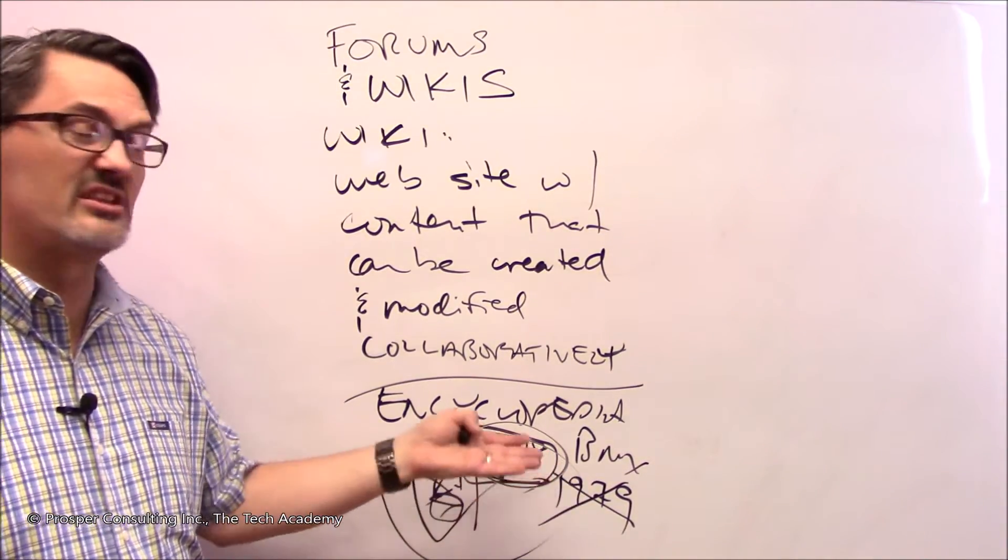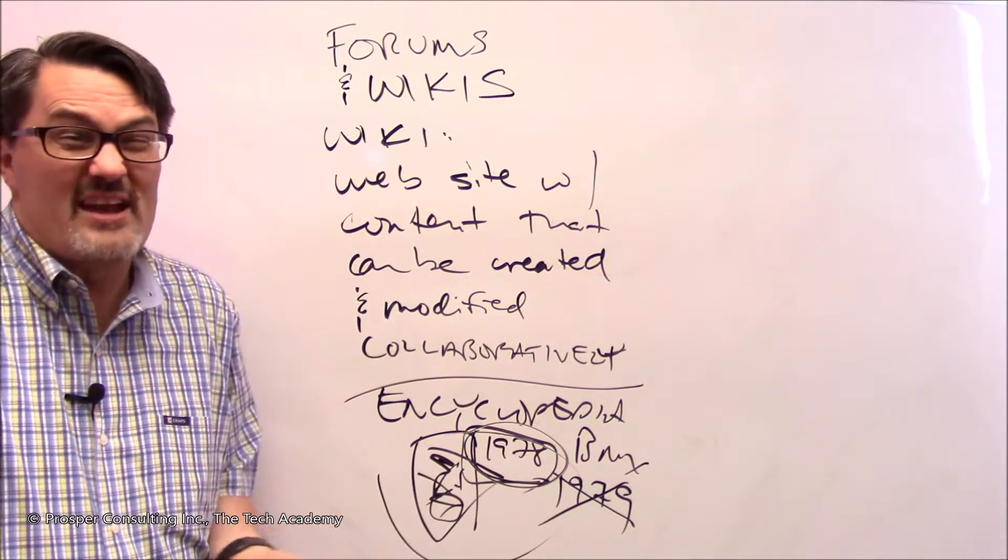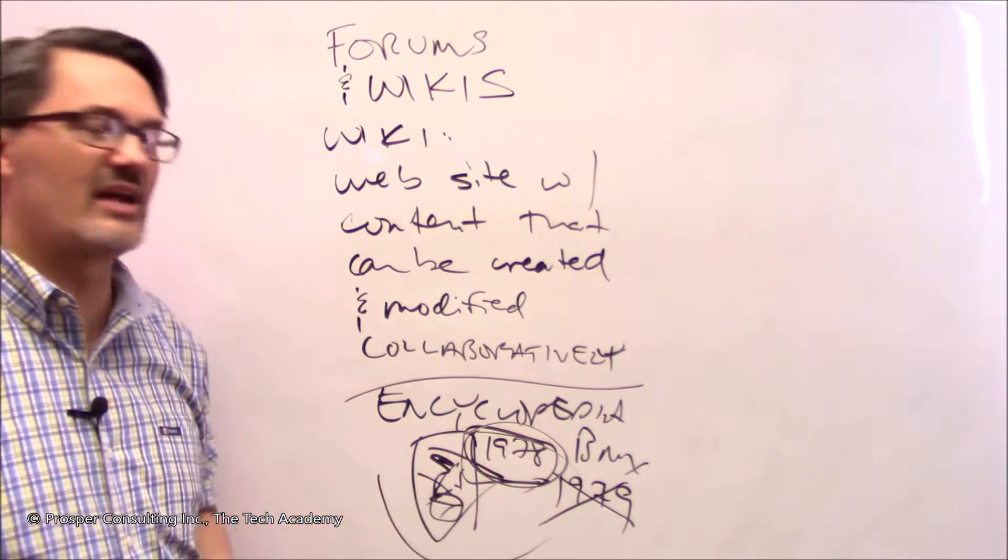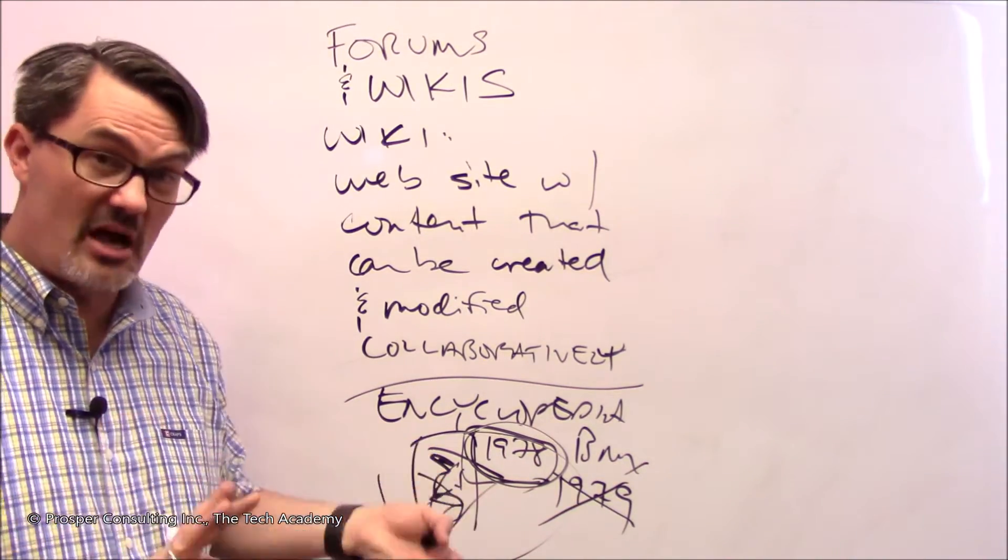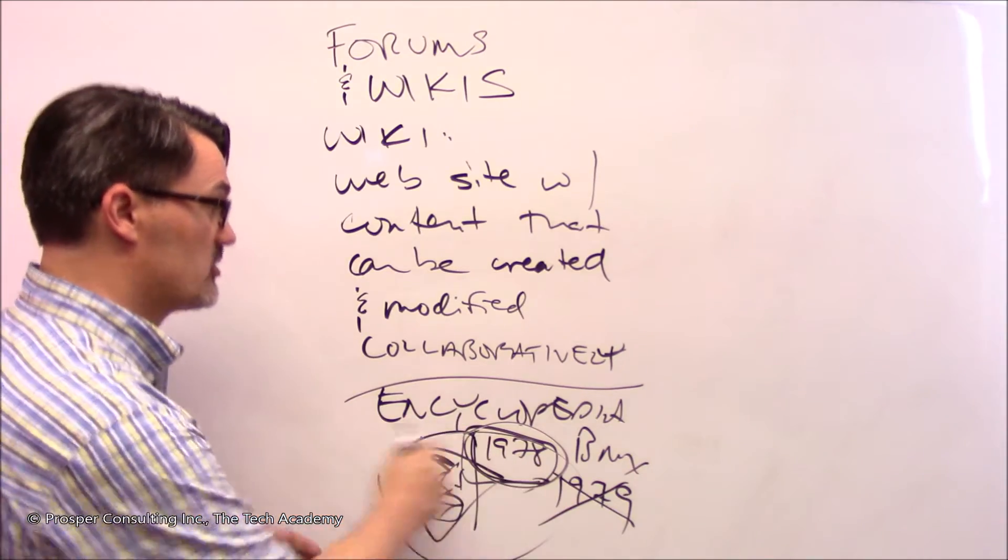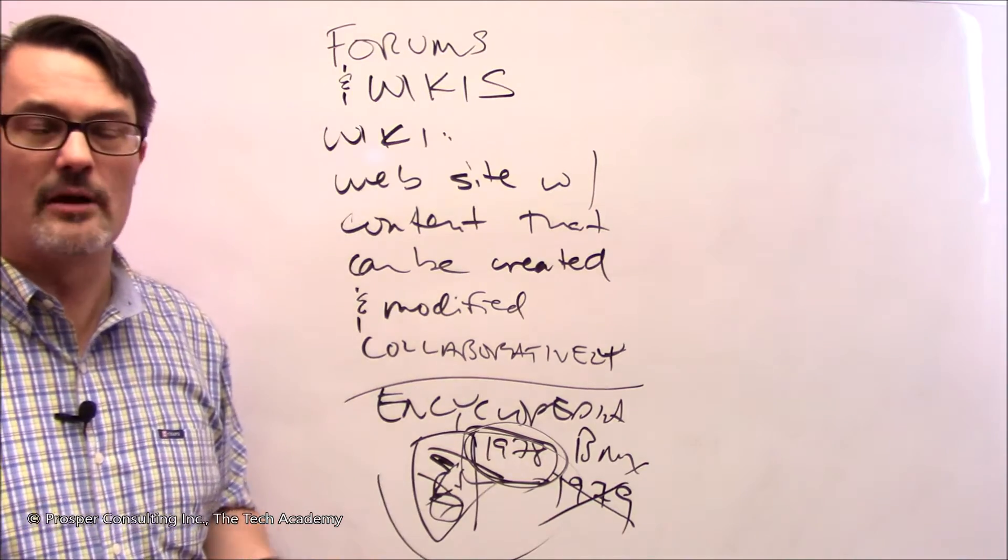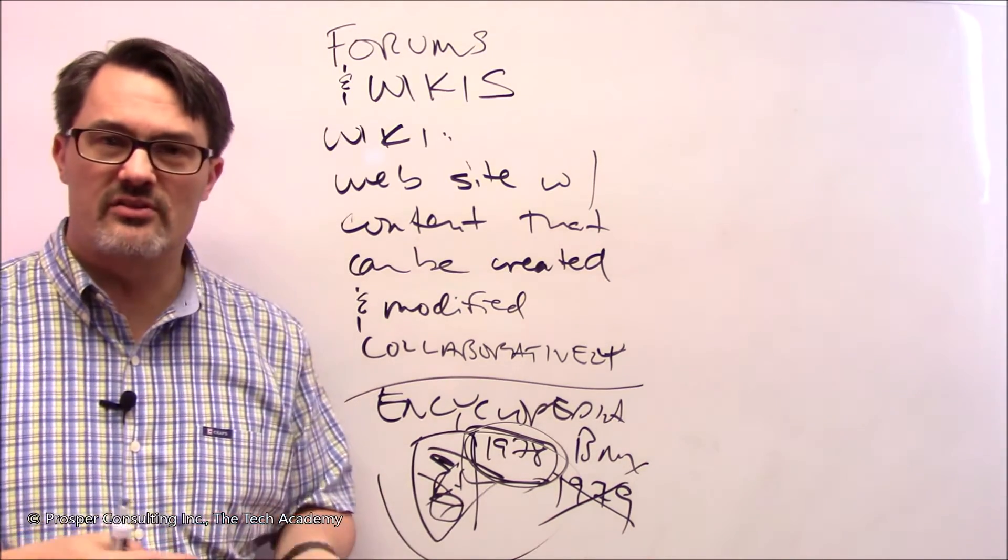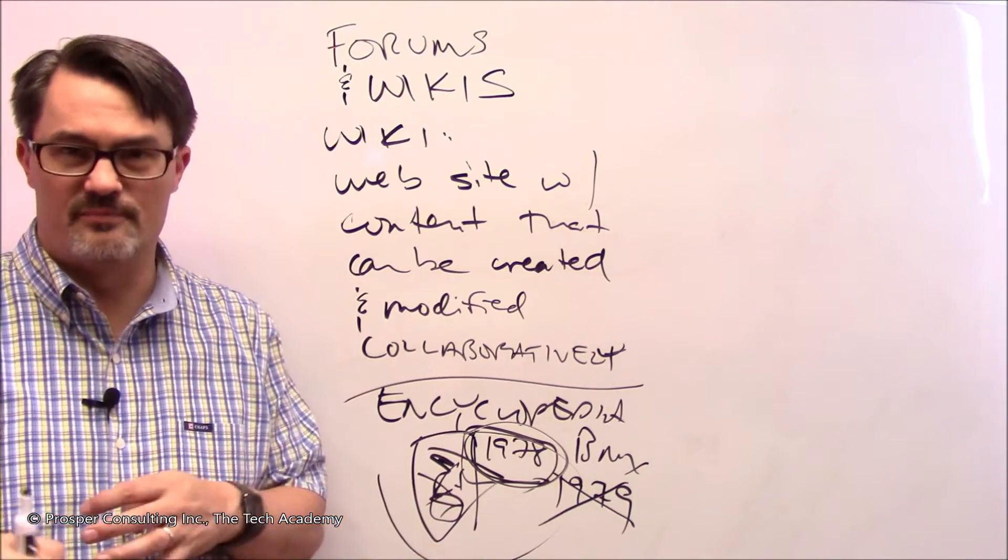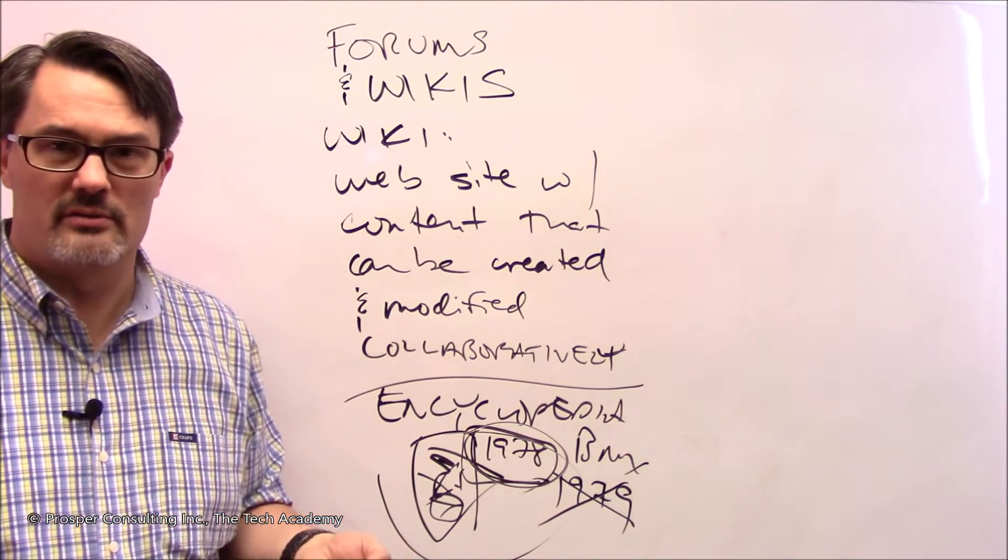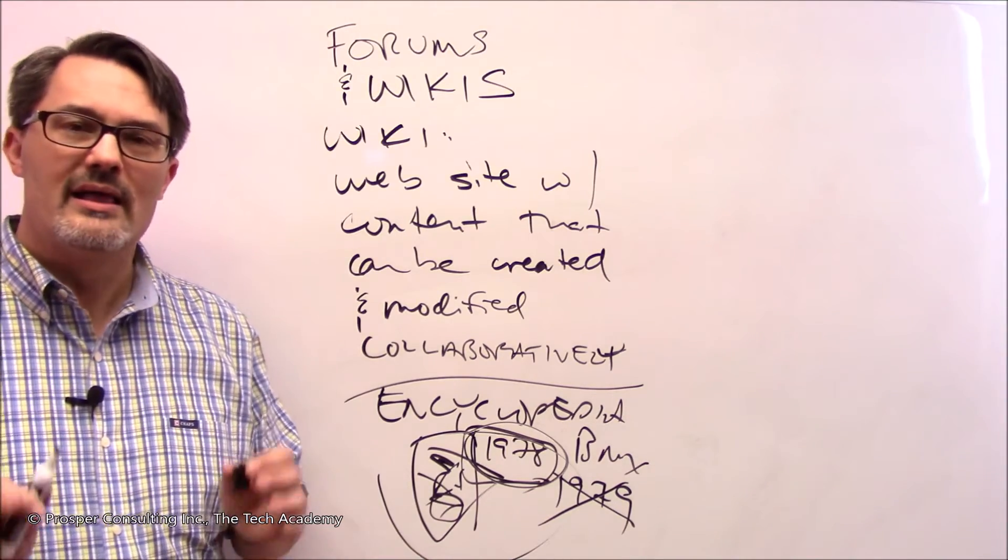And then 150 other people come in and say, sorry, you're wrong, it really was 1978, and they continue to change it. Eventually the administrators of Wikipedia will go, you know what buddy, you're on a one-man crusade, no one else agrees with you, we're sticking with 1978, knock it off. And at that point in time, that has become the official article about that BMX racer on Wikipedia. And it's a constantly shifting thing. In fact, if you'd track something like Wikipedia, you'd see that the content of popular articles on Wikipedia changes constantly.